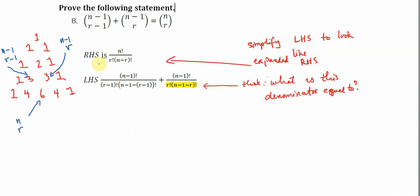And I've already started things off here. We know that if we expand the right hand side, we get n factorial over r factorial times n minus r factorial. We also know that if we expand on the left side, we get this.